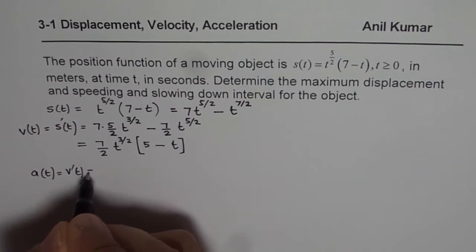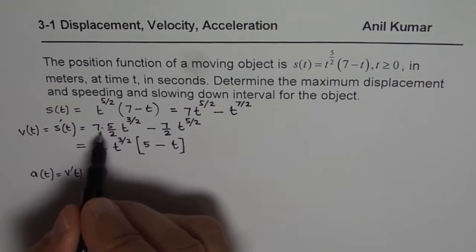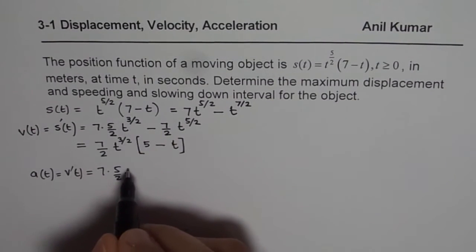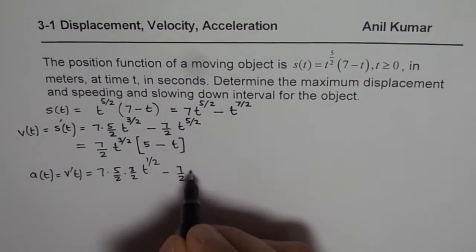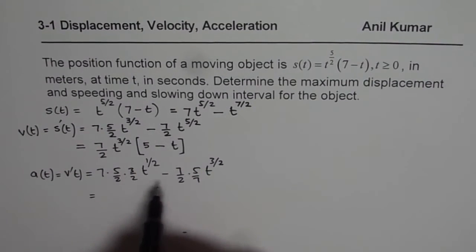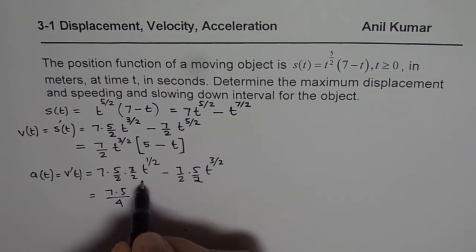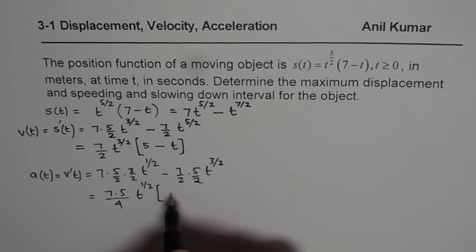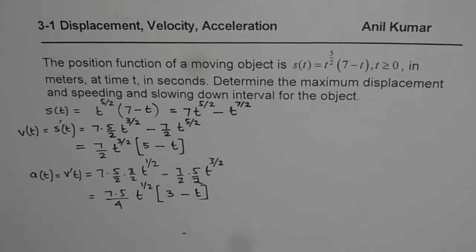Acceleration is the derivative of velocity. To find it, we use the expanded form rather than the factored form. Differentiating term by term: a(t) = 7 * (5/2) * (3/2) * t^(1/2) - (7/2) * (5/2) * t^(3/2). Factoring out the common terms — 35/4 from the coefficients and t^(1/2) from the powers of t — we get: a(t) = (35/4) * t^(1/2) * (3 - t). So we now have equations for displacement, velocity, and acceleration.